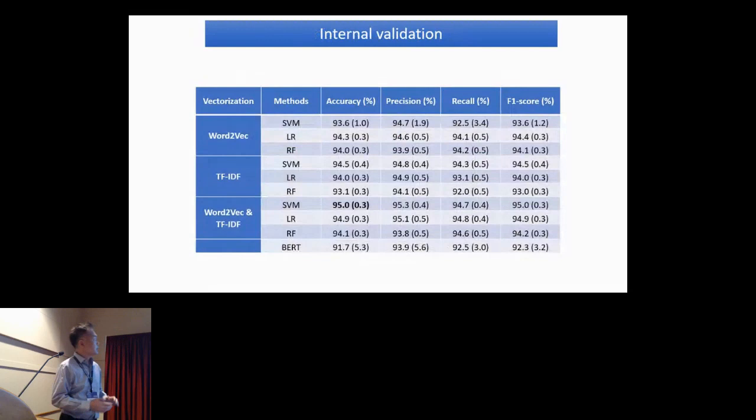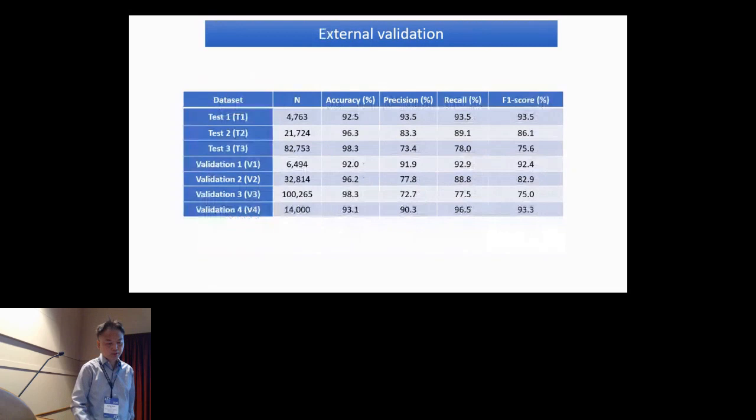This is the result for internal validation. As you can see here, when I used the fused vectors from Word2Vec and TF-IDF, all algorithms had better performance than using Word2Vec or TF-IDF vectors only. SVM linear SVM achieved 95% accuracy and 95% F1 score. Also interestingly, when I used only title - not using abstract, title only - I also achieved 89% accuracy. That's very interesting.